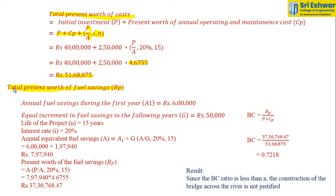Total present worth of fuel savings: annual fuel savings during the first year A1 is Rs. 6,00,000, equal increment G is Rs. 50,000, N is 15 years, and interest rate is 20%. The annual equivalent fuel savings A equals A1 plus G × (A/G, 20%, 15). The factor (A/G, 20%, 15) is obtained from the data book, giving A equal to Rs. 7,97,940.